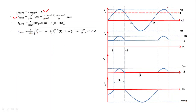Now we calculate various parameters. V0 average equals i0 average times R plus E. The average output current i0 average equals (1/2πR) times [2VM cos(θ) minus E(π minus 2θ)], since current flows only from θ to π-θ. Once i0 average is known, V0 average can be calculated easily.